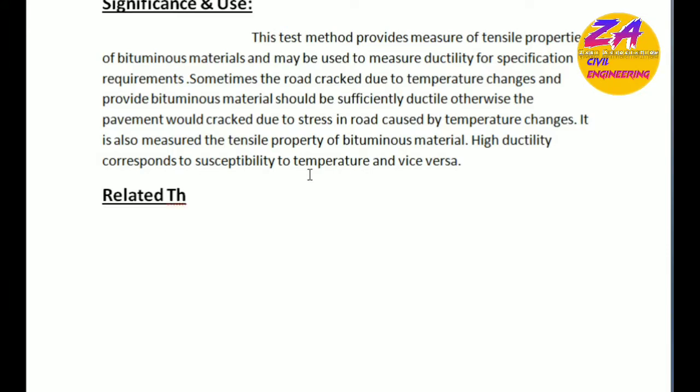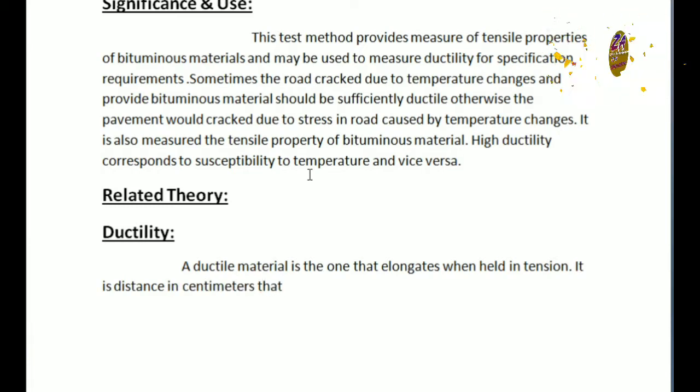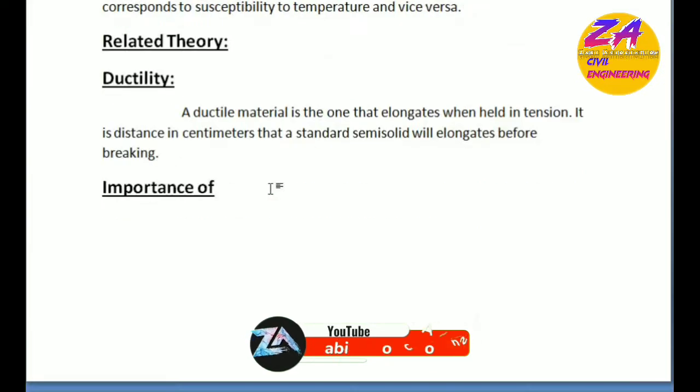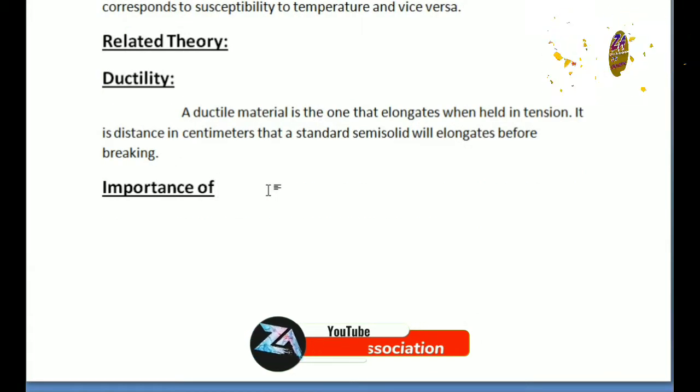After significance, we go to the related theory. The first term is ductility. What is ductility? A ductile material is one that elongates when held in tension. It is the distance in centimeters that a standard semi-solid specimen will elongate before breaking. That is called ductility.